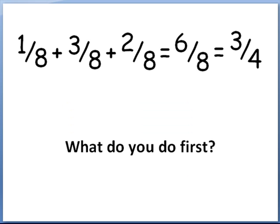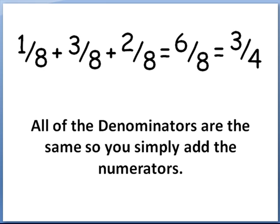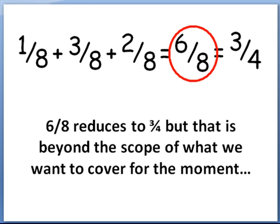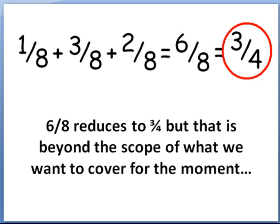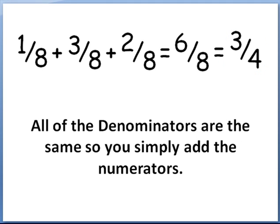All the denominators are the same here: we have 1 eighths, 3 eighths, plus 2 eighths. I simply add the numerators: 1 plus 3 is 4, plus 2 is 6. Then we have 6 eighths, and 6 eighths will reduce to 3 quarters. However, reduction is a little beyond what we want to cover right now. All the denominators must remain the same, and then you simply add the numerators.